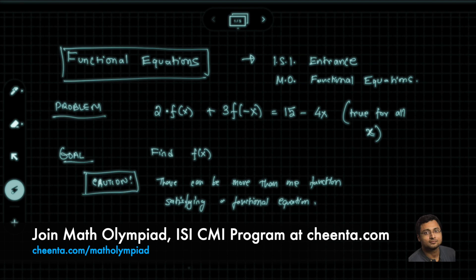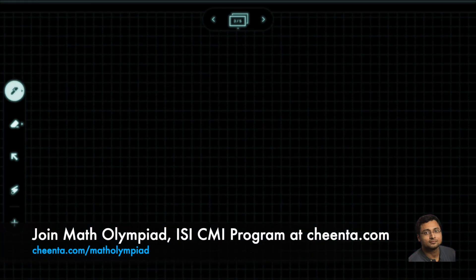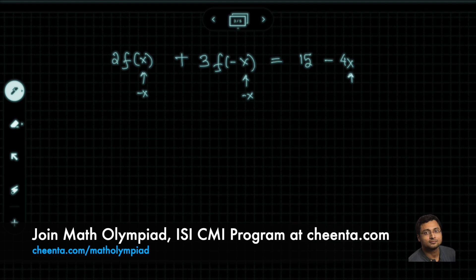Let's try that. We will be writing the original equation here: 2 times f(x) plus 3 times f(-x) is equal to 15 minus 4x. Now replace x by negative x. That's the hint. Can you pause the video here and give it a try? Now replace x by negative x in each slot.